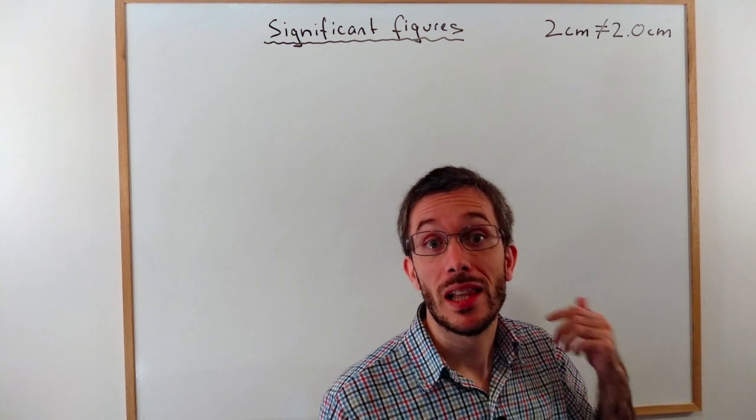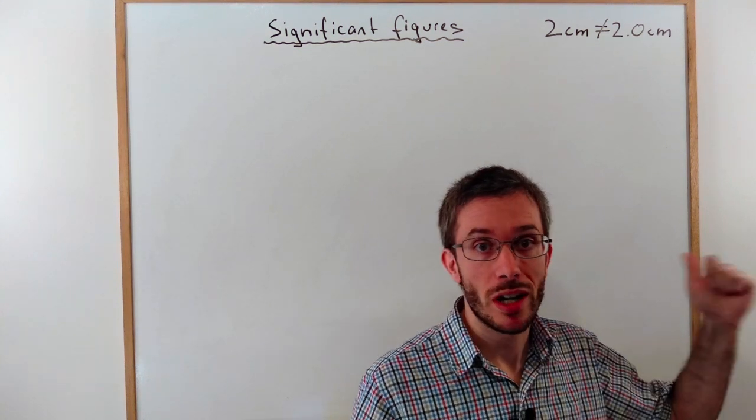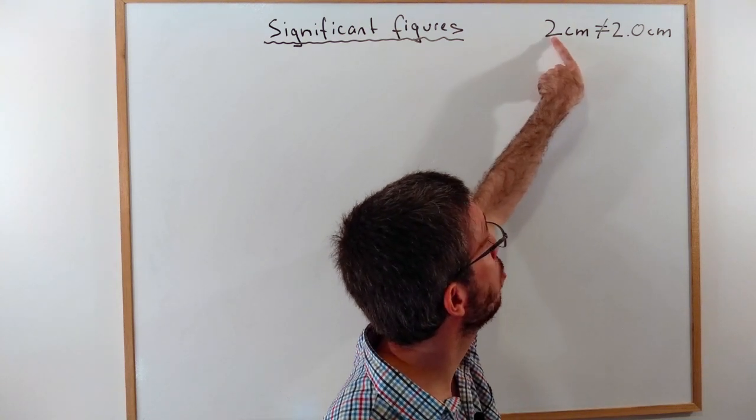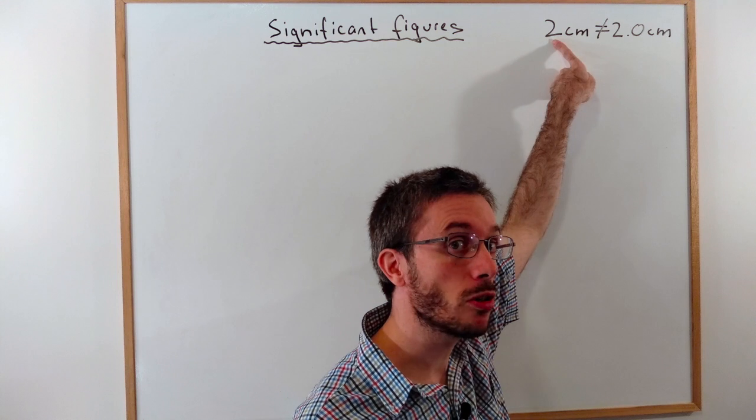The basic rule is that only the last number that we write down is estimated. In this number here, 2 cm means the 2 is actually estimated and we are not sure about it.